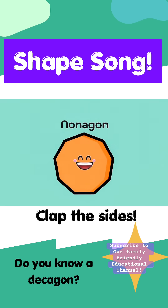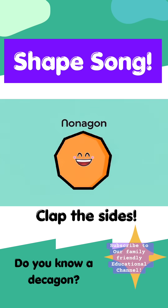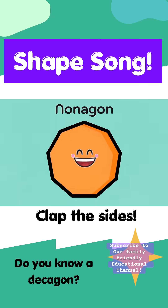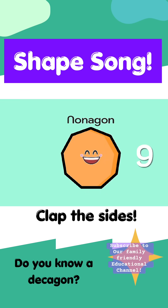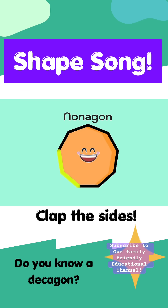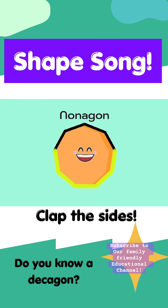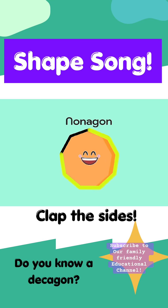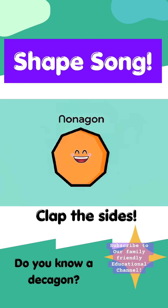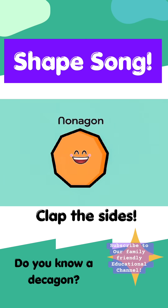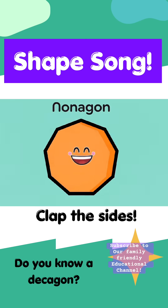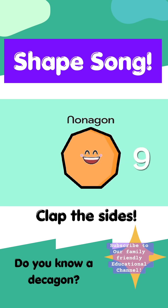Don't forget the nonagon. Let us clap before it's gone. It has nine sides. One, two, three, four, five, six, seven, eight, nine. Don't forget the nonagon. Let us clap before it's gone. It has nine sides.